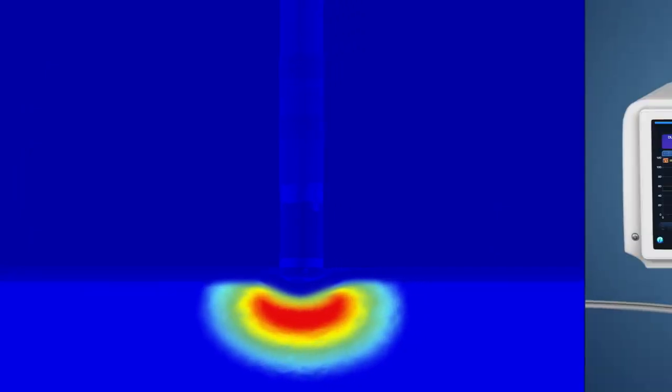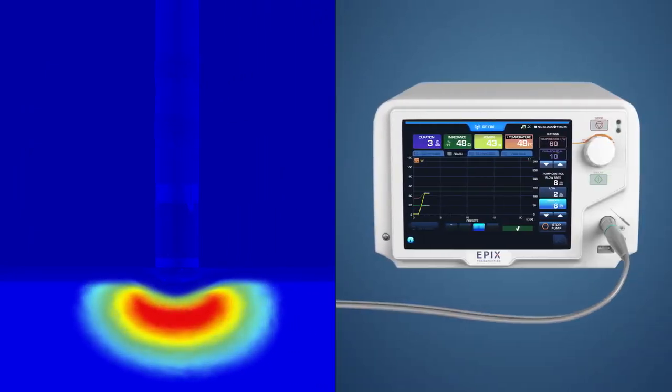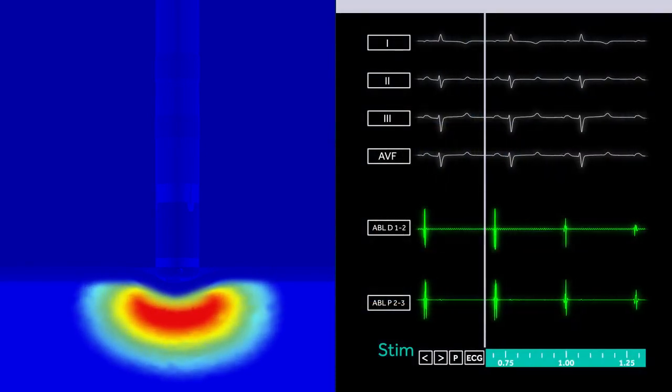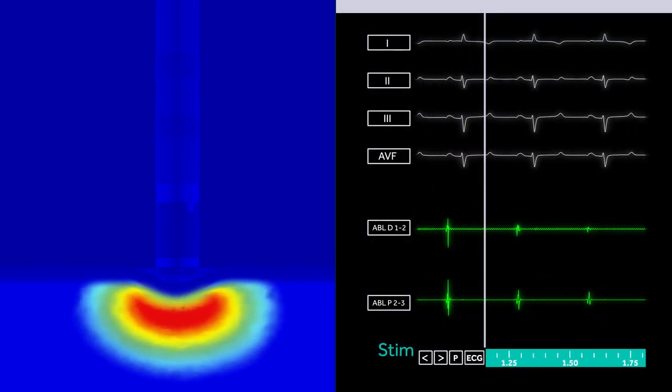Temperature, impedance, and electrogram attenuation are key biophysical parameters which are used to assess lesion formation with the Diamond Temp ablation system.